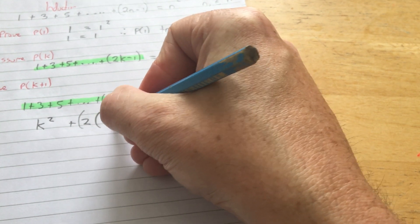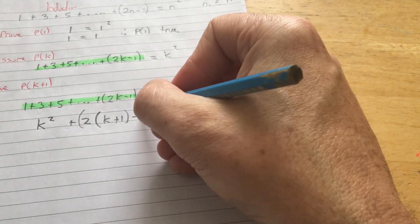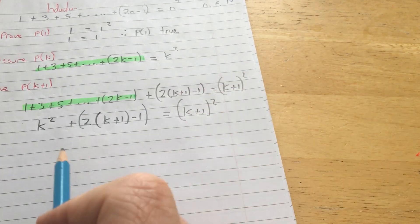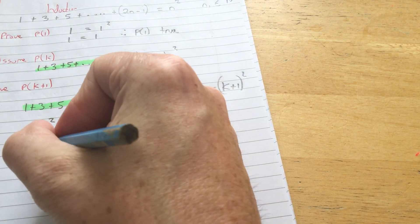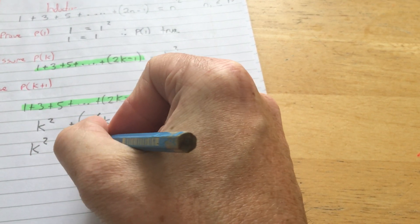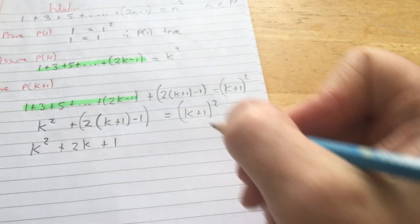And that equals, yeah, so k plus 1 squared. So multiply this out now, and I get k squared. Now 2 times k is 2k. And 2 times 1 is 2. And then take away 1. That gives you 1.